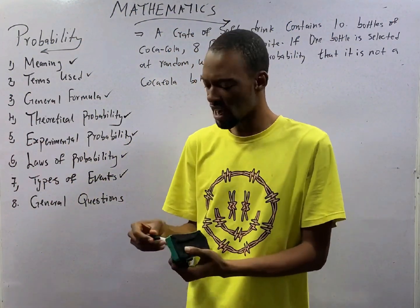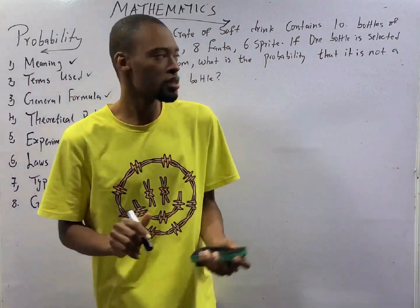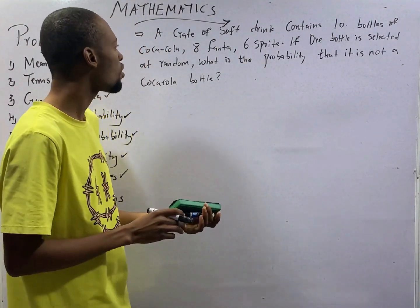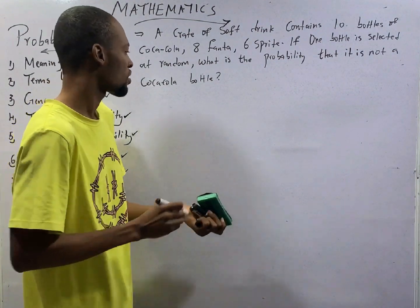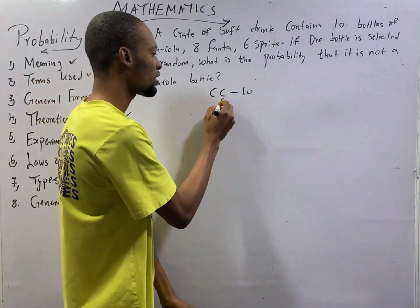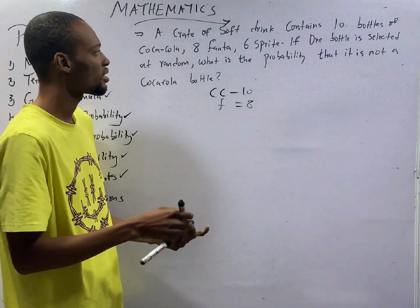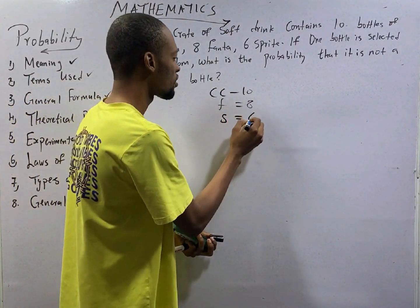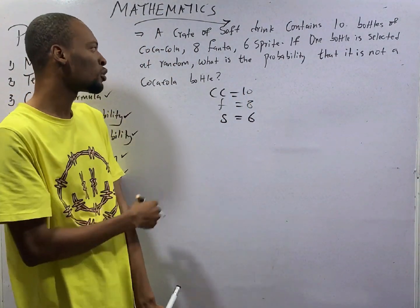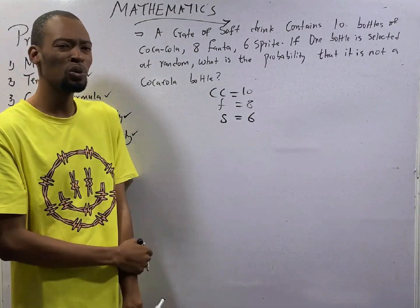Ladies and gentlemen, let's look at general probability questions. The first question here is, a crate of soft drink contains 10 bottles of Coca-Cola, 8 Fanta, 6 Sprite. If one bottle is selected at random, what is the probability that it is not a Coca-Cola bottle?